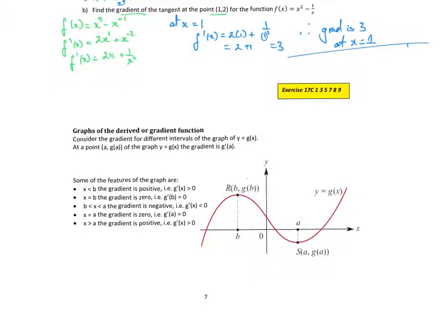Let's look at the graph of a gradient function. So we're concentrating on the gradient of the line, which is also the derivative function. We know from when we first sketched cubic graphs — those are my turning points. If I draw a line that touches those graphs there, that's where my gradient is 0. So g'(x) is equal to 0 at those points.